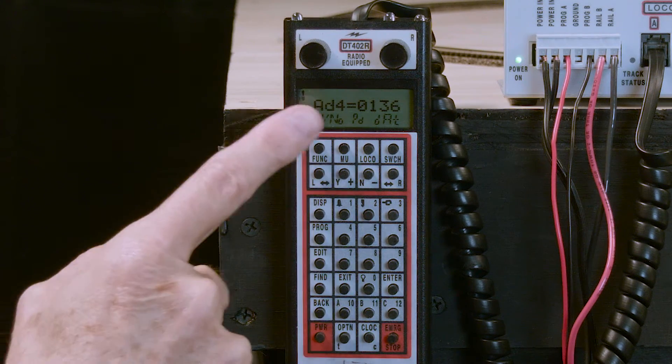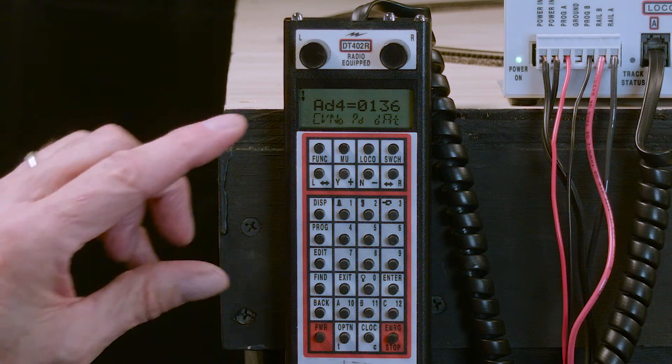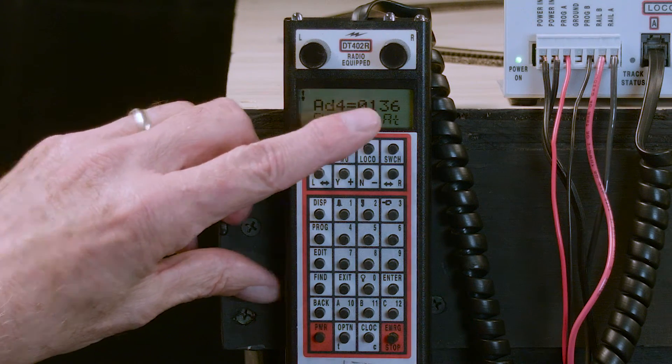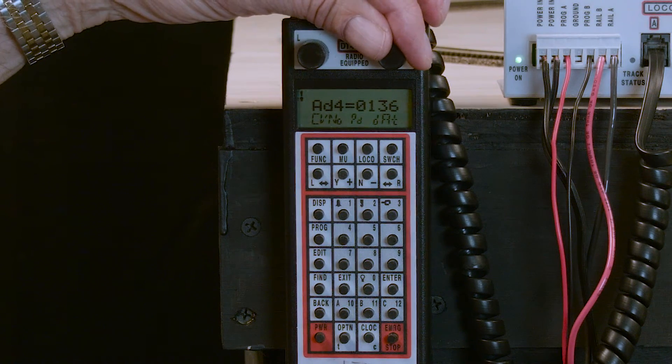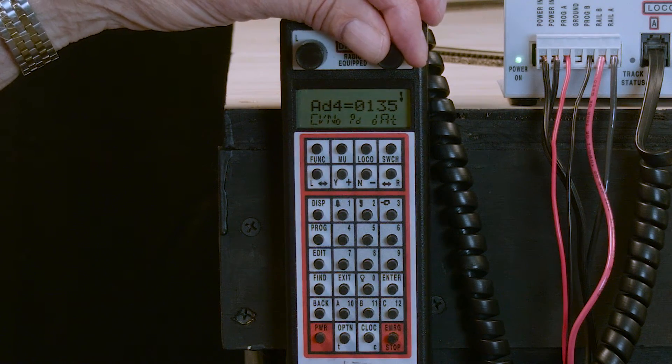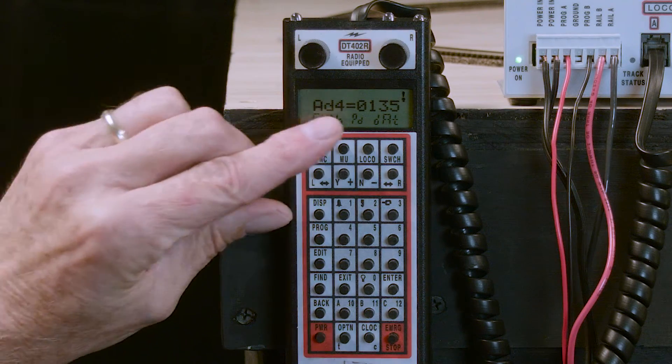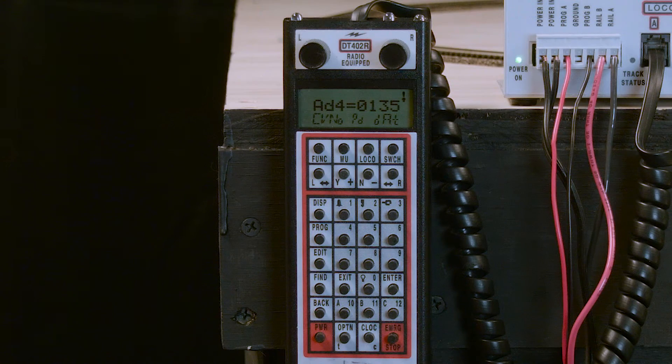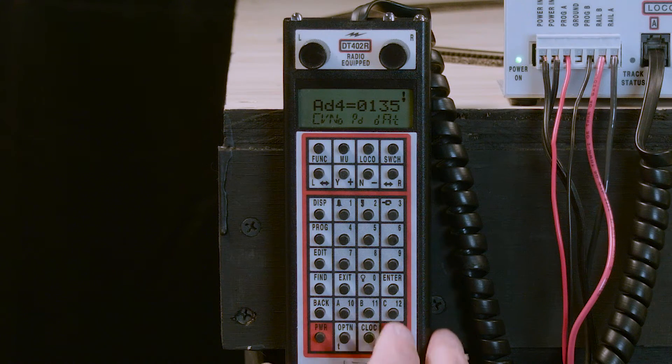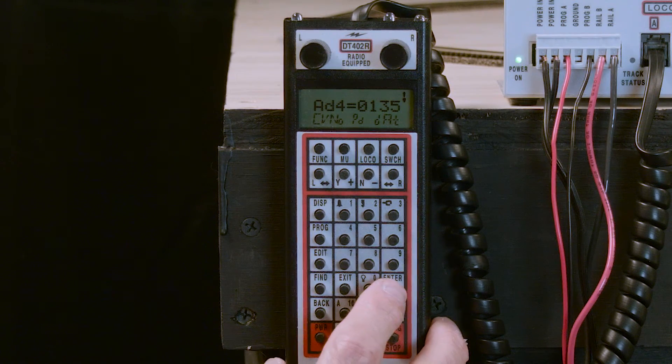I waited too long and wound up getting 136 in the display. In order to rectify that problem, we simply take the right-hand throttle knob, turn it counterclockwise, get 135. We again now have AD4 equals 0135 and we press the Enter key and Y plus key.